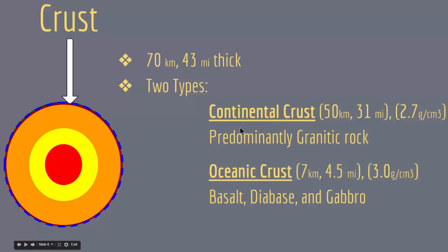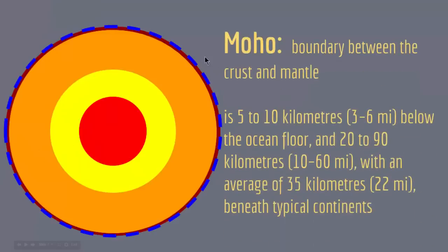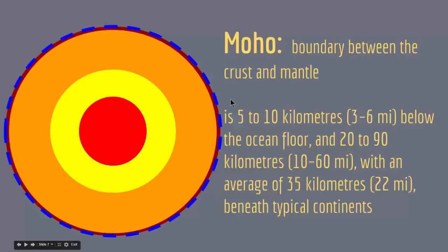After the crust we have a region called the Moho, which is the boundary between the crust and the mantle. It is about 5 to 10 kilometers thick below the oceanic floor, and 20 to 90 kilometers — with an average of 35 kilometers — beneath typical continents. The Moho has distinct physical properties that differentiate it from the layers on either side.